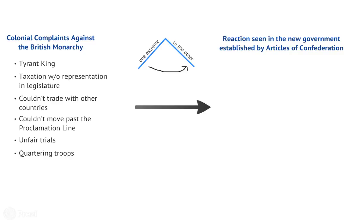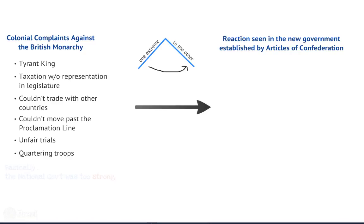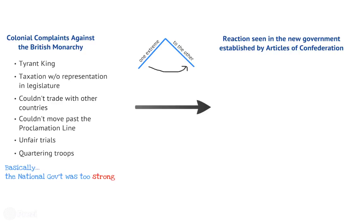He also demanded the quartering of troops in the colonists' homes. All these things made the colonists very upset. They said this is the type of government we have and we don't want it anymore — the national government was way too strong.